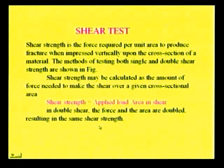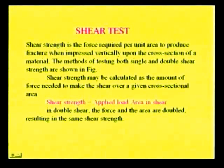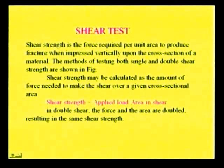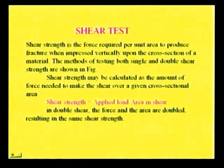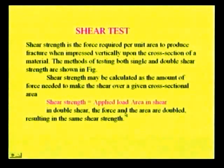The next one is the shear test. In this test, the force required per unit area to produce fracture when impressed vertically upon the cross-section of a material is measured. There are two types of shear: single shear and double shear. Shear strength is calculated by the amount of force needed to produce shear over a given cross-sectional area. Shear strength equals applied load divided by area in shear. In double shear, the force and the area are doubled, resulting in the same shear strength.